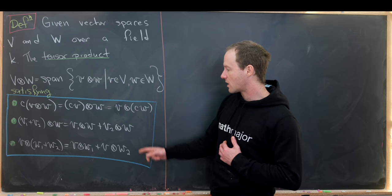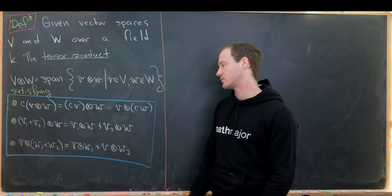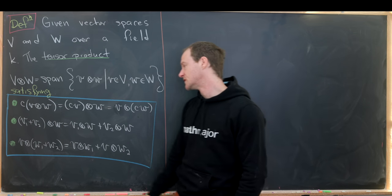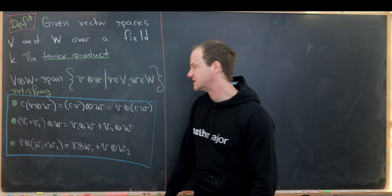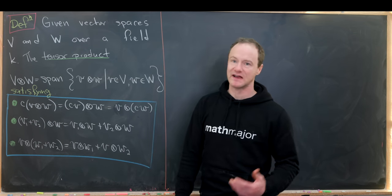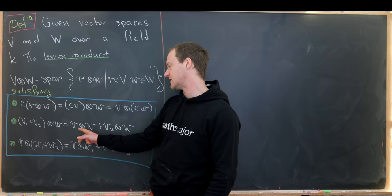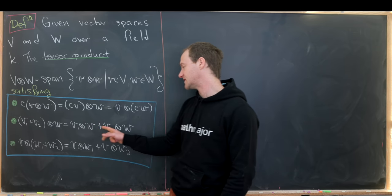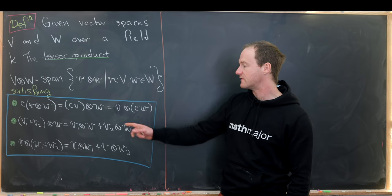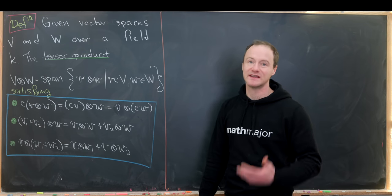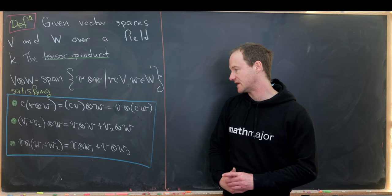We also have two distributive-type rules. If we have (v1 + v2)⊗w, that's the same thing as v1⊗w plus v2⊗w, and similarly in the other argument.